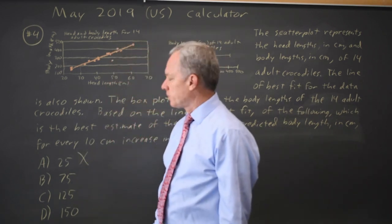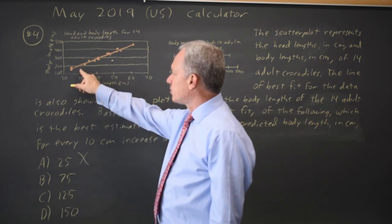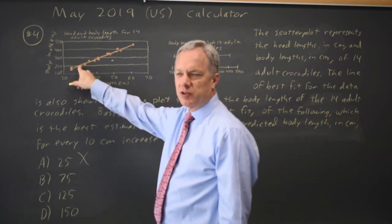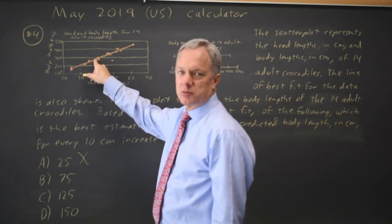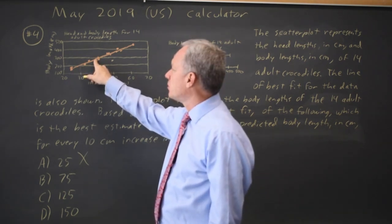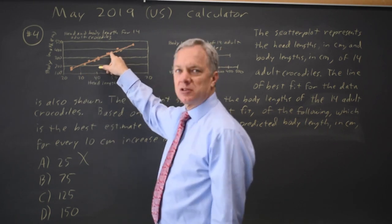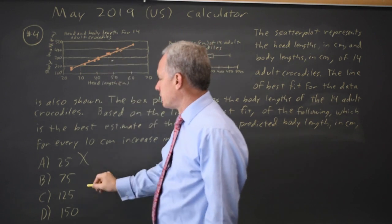If you try 75, from 215, 215 plus 75 would be 290, which is pretty close. 290 plus 75 would be 365, which is also close to the line of best fit, so that looks reasonable.